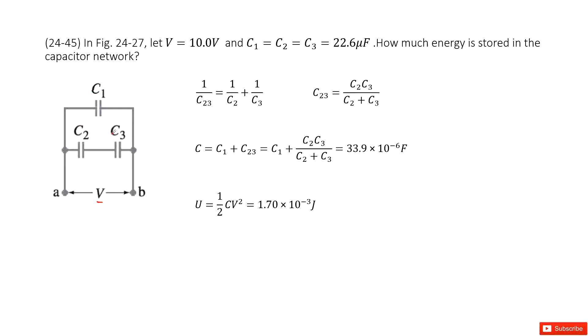In this case, the given quantities are V and C. If you want to find the energy stored, you can write the function ½CV². V is given, so it looks like we just need to find the equivalent capacitance for this capacitor network. So how can we do that?